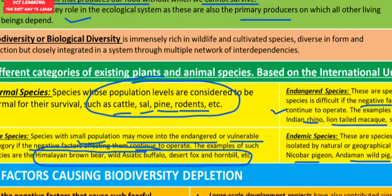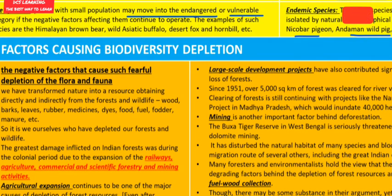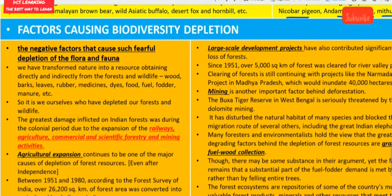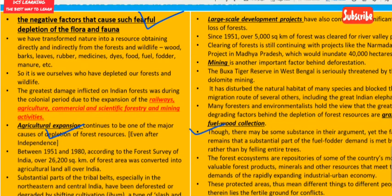Now let us discuss the negative factors causing biodiversity depletion. These factors include agricultural expansion, fuel collection, mining, large-scale development projects, and many more. We have transformed nature into a resource, obtaining wood, bark, leaves, rubber, medicine, dyes, food, fuel, fodder and manure directly and indirectly from forests and wildlife — and it is we ourselves who have depleted our forests.